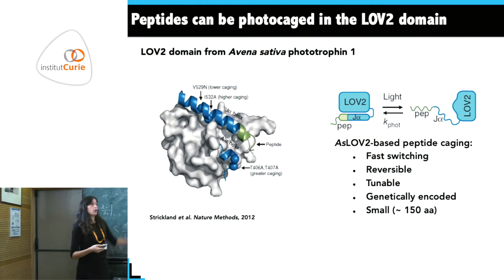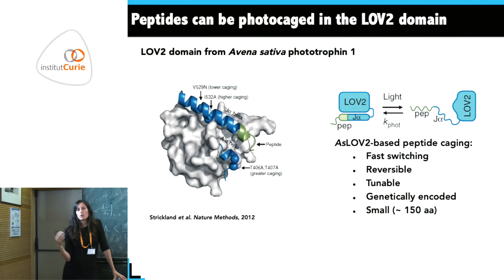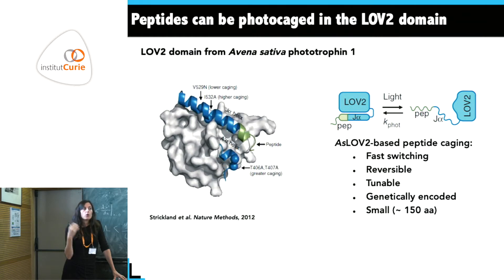The advantages of such a method are that the LOV domain is small — roughly the size of a GFP, about 20 kilodaltons — and it is entirely genetically encoded. There are also groups working with photocaged chemical molecules, typically uncaged with UV light, but working with genetically encoded optogenetics is better because you simply give cells the plasmid and they produce the molecules themselves.